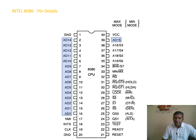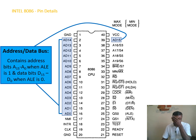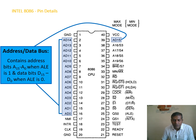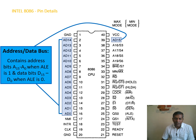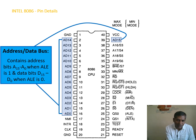We have address lines starting from A0 to A15. These lines are multiplexed with the data bus. The data bus starts from D0 to D15, giving us a 16-bit data bus and a 20-bit address bus from A0 to A19. This address bus can generate addresses from 000000 to FFFFFH, supporting a total of one megabyte of memory. This multiplexing of address and data bus is used to minimize the size of the IC so that the same lines can be used for generating both address and data.